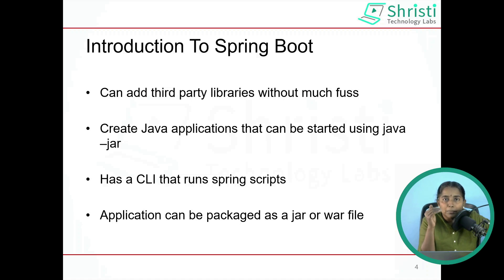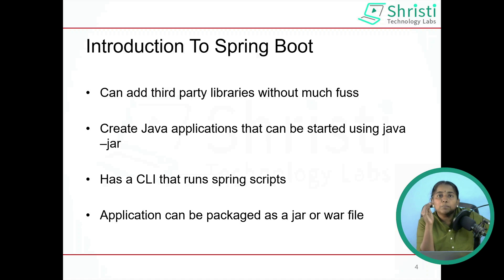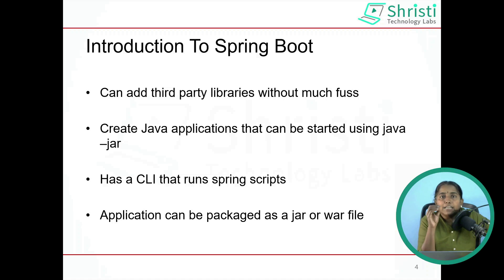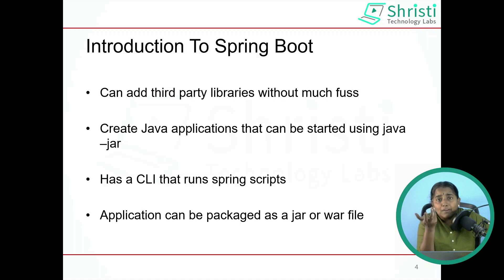With Spring Boot, that is no longer required — you can pick and choose the dependencies and they will be added to your application automatically. You can create Java applications that can be started with java-jar, meaning after you have created your Spring applications they behave like simple Java applications. You can run these applications from the command line using the CLI, by converting your application into a jar file and running it with java-jar.